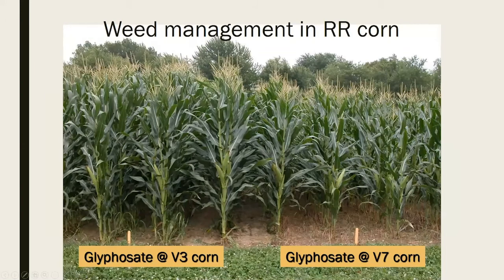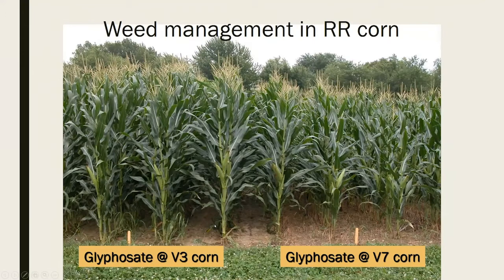This is just a demonstration of that. Here on your left, these four rows centered on that stake were sprayed when the corn was V3. And these four rows over here were sprayed at V7. You can see there's about a two-foot height difference in the corn just by delaying. You can also see that the weed control was really good when we sprayed at V7, and we can start to see quite a few escapes at V3 — but the damage was done because we had weeds competing with the corn early in its life.